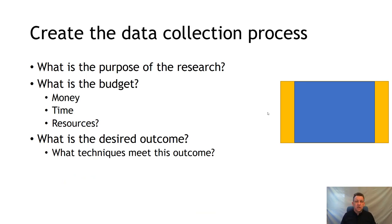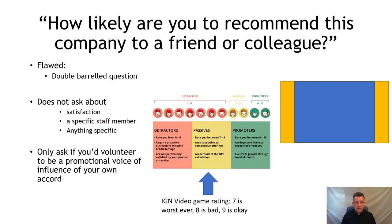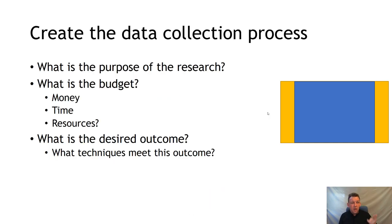I really hate the Net Promoter Score and want to see it gone, because it defeats a whole bunch of market research — particularly when you start asking: what is the purpose of the research, why are we asking the question? If we're asking whether the customer is satisfied, NPS doesn't answer that question. So: what's the purpose of the research? How much money do you have — budget is money, time and resources. What's the desired outcome? What do you need to know, what do you want to know, and what techniques best meet the acquisition of that knowledge?